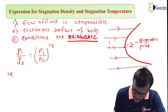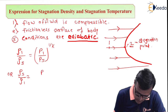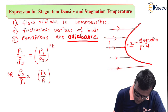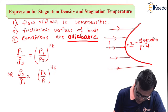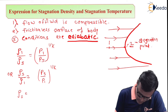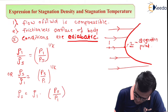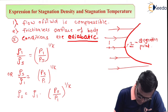So rho1 upon rho_s is equal to p1 upon p_s to the power 1 upon k. Or we can write it as rho_s upon rho1 is equal to p_s upon p1 to the power 1 upon k. So rho_s can be equal to rho1 into p_s upon p1 to the power 1 by k.